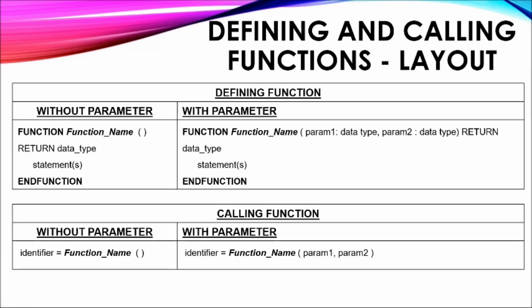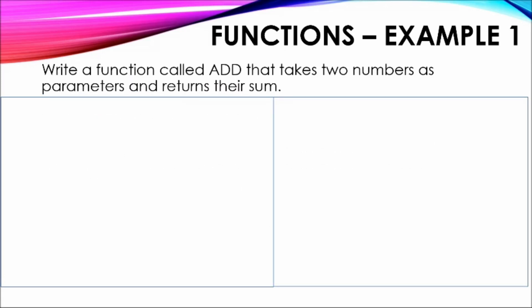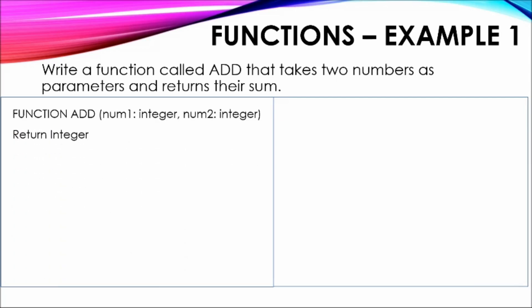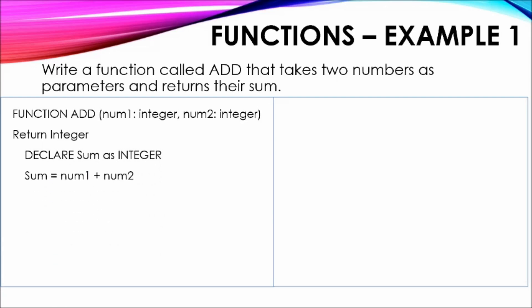Functions Example 1: The following example indicates the need of a function called Add that takes two numbers as parameters and returns their sum. The solution shows the function definition containing the name of the function, the parameters being accepted and their data types, and the data type of the returned value. The variable sum is declared as integer. It is important to note that the data type of the variable used to store the result within the function needs to be the same as the return data type.